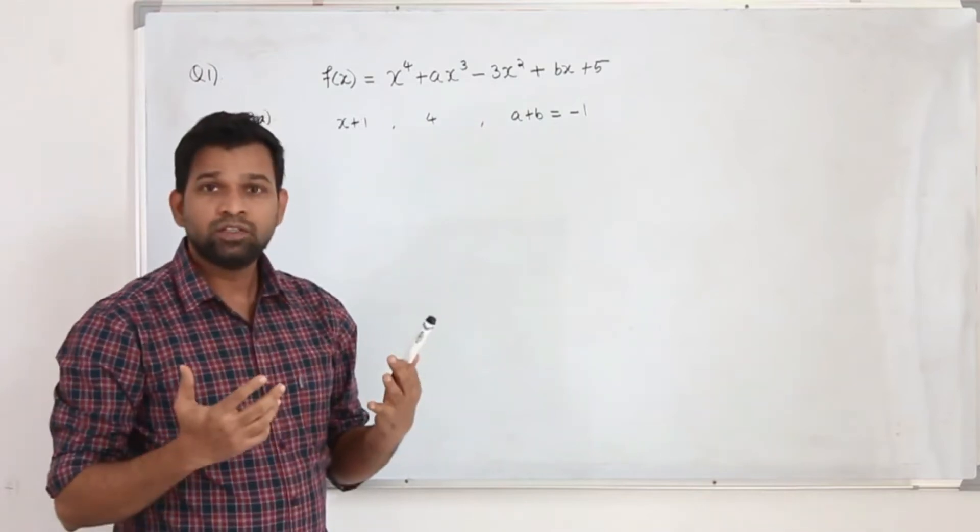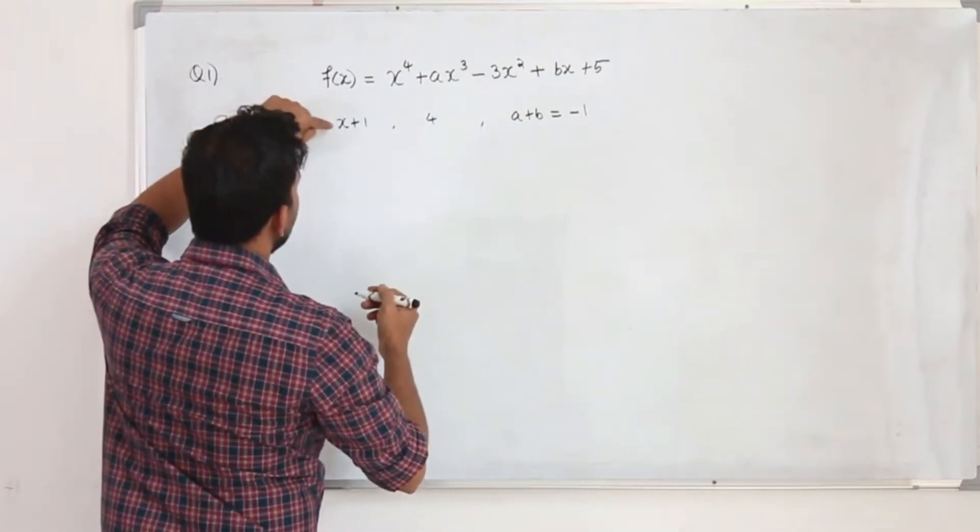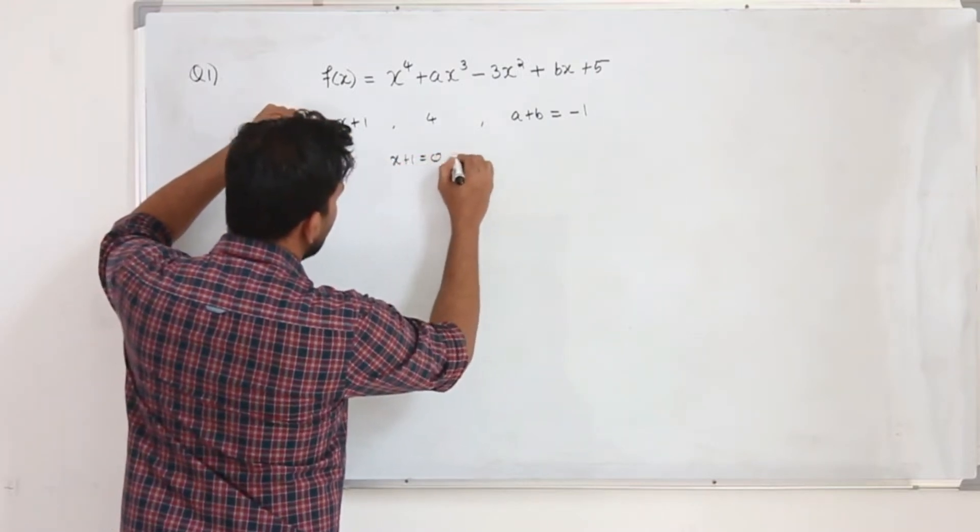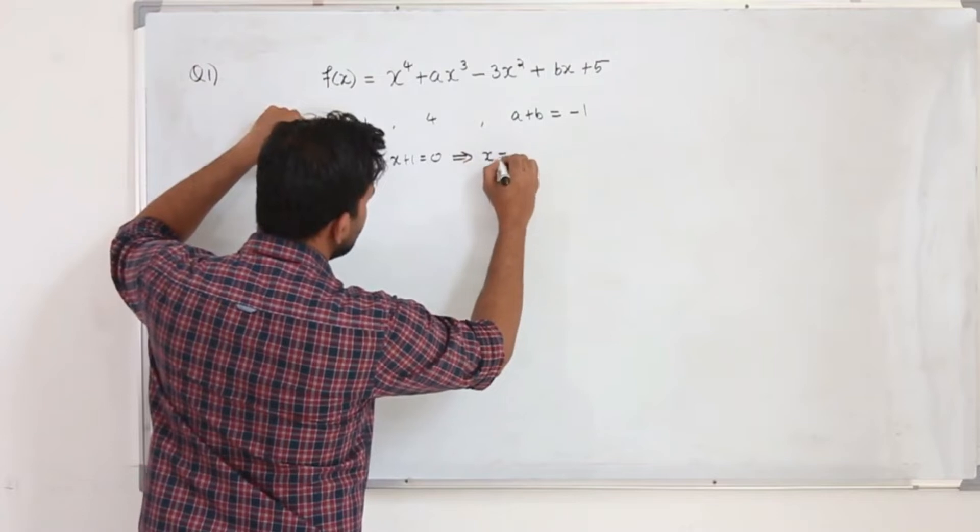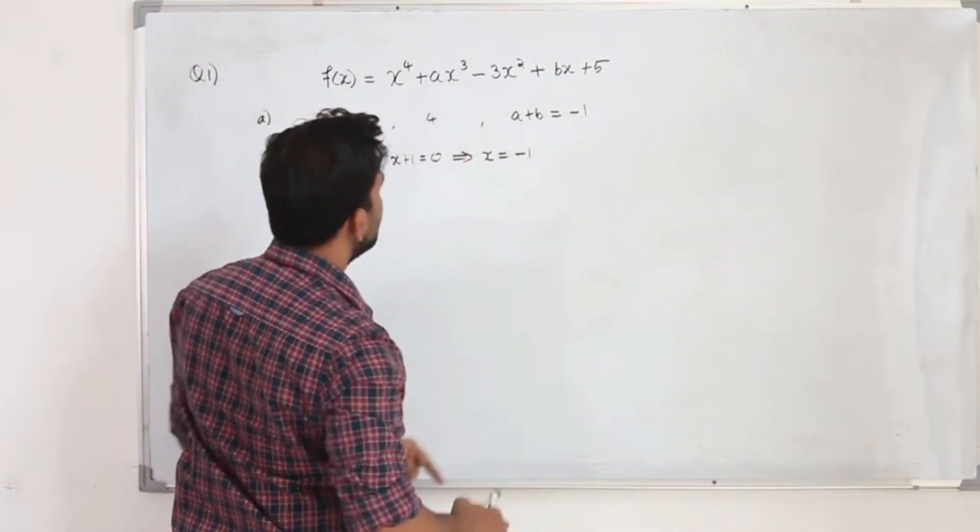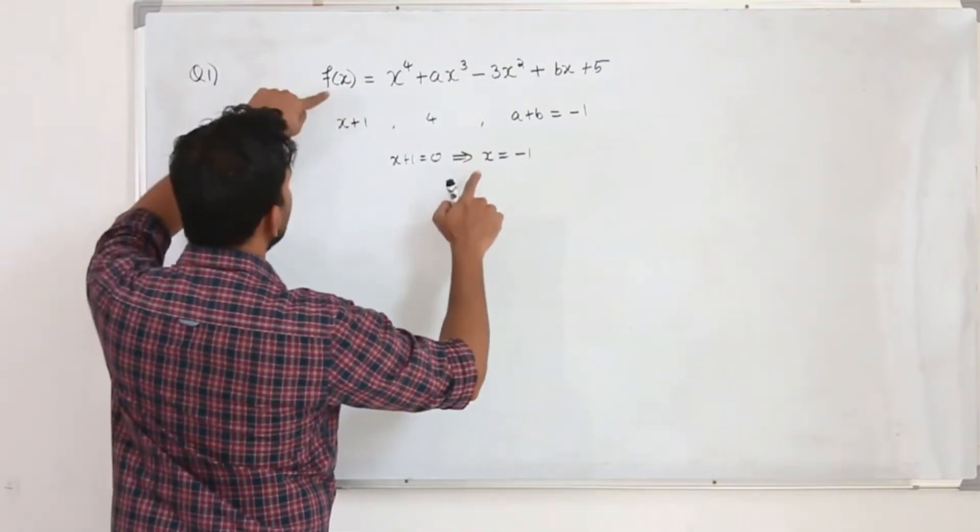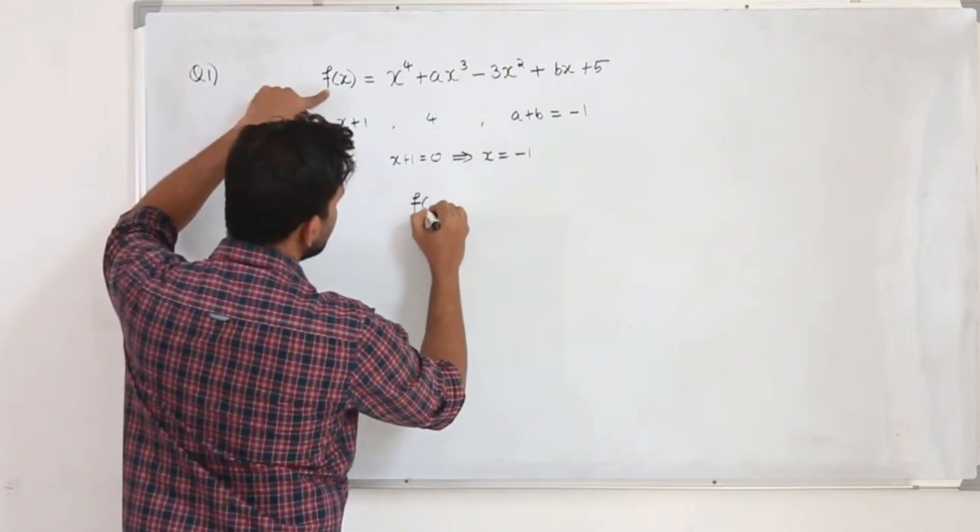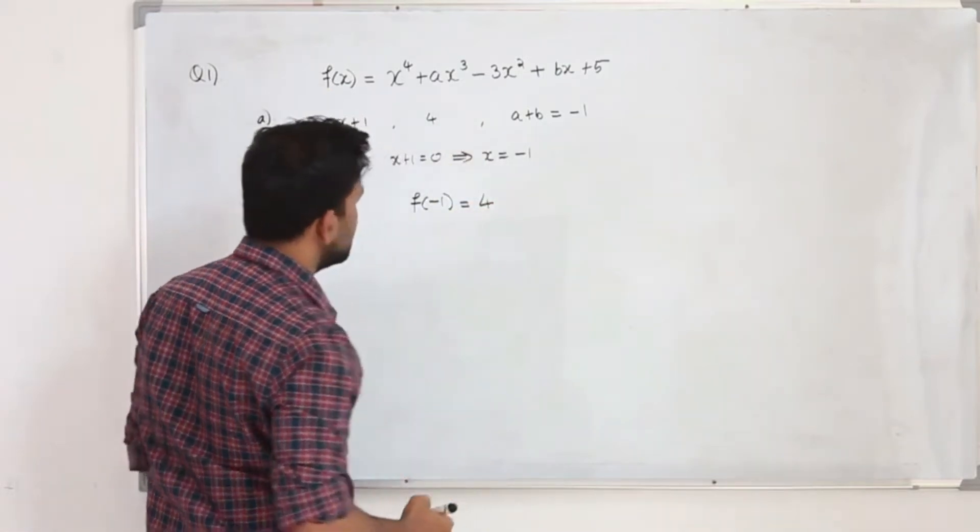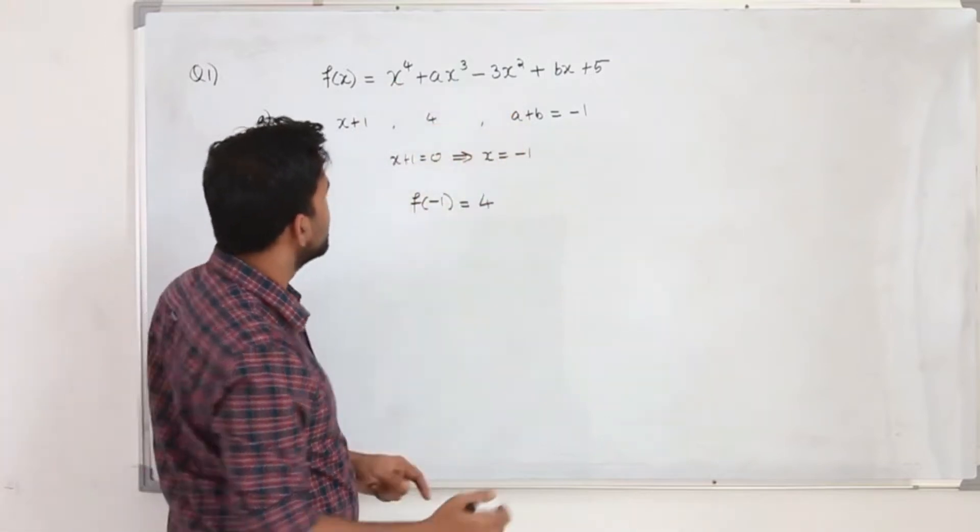So we are going to apply the remainder theorem. Now, if f of x is divided by x plus 1, first take x plus 1 is equal to 0 and find x. Our x is minus 1. Replace x by minus 1 in this function, then you will get the remainder. You don't need to use the long division method. So when we find f of minus 1, the remainder is 4. So that is what is given.